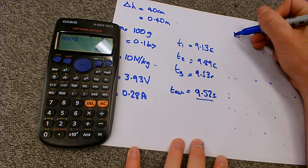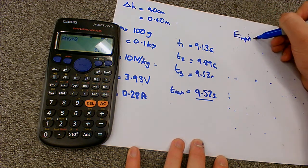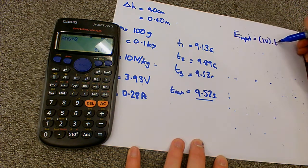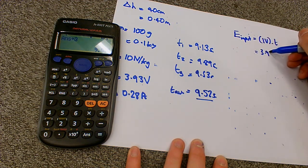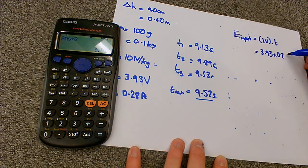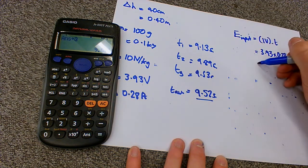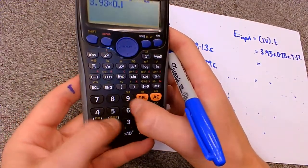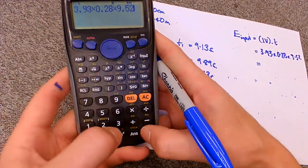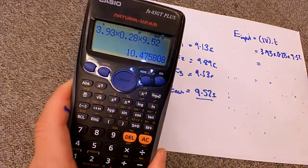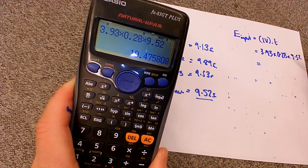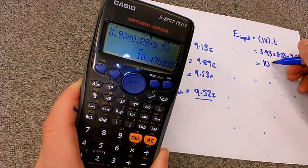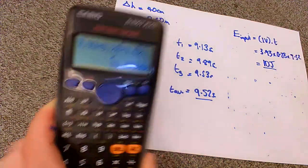So I'm going to first calculate the amount of energy we've put in. So the energy input, remember, from the previous slide, here we're going to do power, which is IV, times by time. So we're going to do 3.93 times 0.28 times by 9.52. So this is the amount of energy that we've actually put in. So 3.93 times 0.28 times 9.52. Okay, so we have put in, let's have a look at what's a sensible number to round this to. Our 0.28 is a 2-significant figure number. So let's just round that to 10 joules.